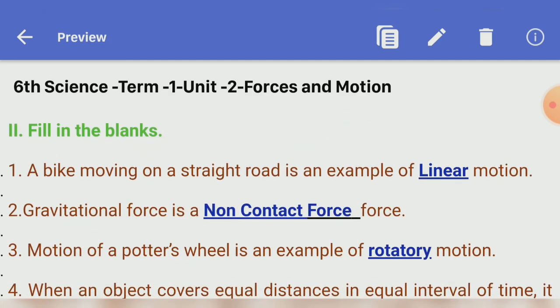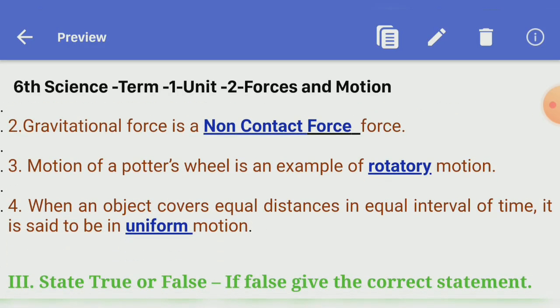Second roman, fill in the blanks. First one: a bike moving on a straight road is an example of dash motion. Answer: linear. Second one: gravitational force is a dash force. Answer: non-contact force. Third one: motion of a potter's wheel is an example of dash motion. Answer: rotatory motion. Fourth one: when an object covers equal distances in equal intervals of time, it is said to be in dash motion. Answer: uniform.